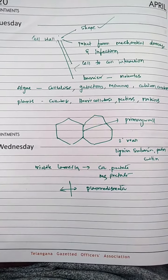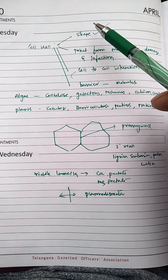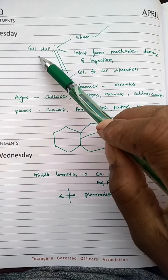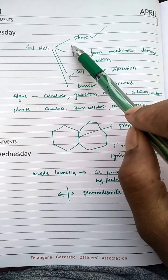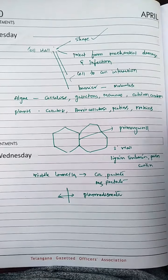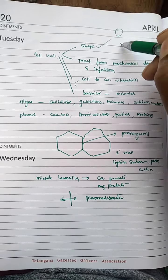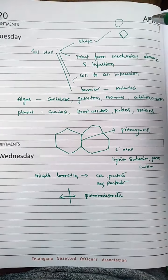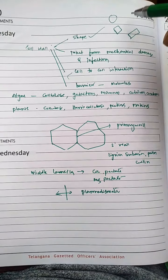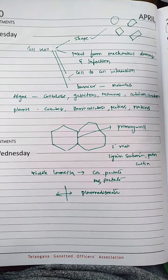The first function is giving shape. The cell wall gives a particular rigid shape to the cell. Due to the presence of the cell wall, plant cells have different shapes — some cells are round, some are square, some are rectangular, and some are barrel-shaped.